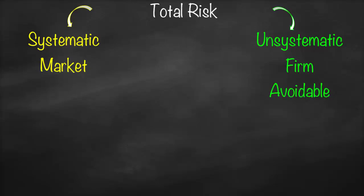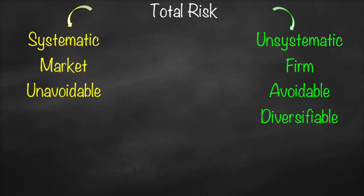Therefore, unsystematic risk is avoidable — that's why we call it avoidable risk — while systematic risk is unavoidable, and that's why we call it unavoidable risk. We can avoid unsystematic risk through diversification, which means don't put all your eggs in the same basket.